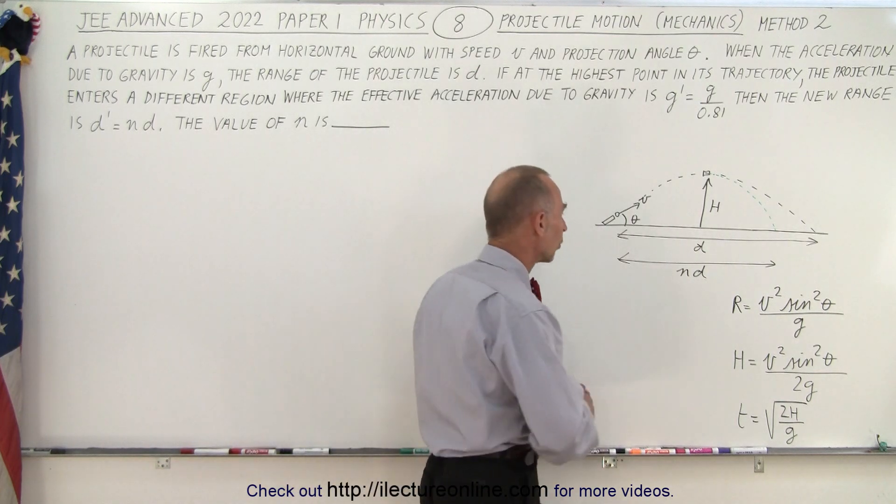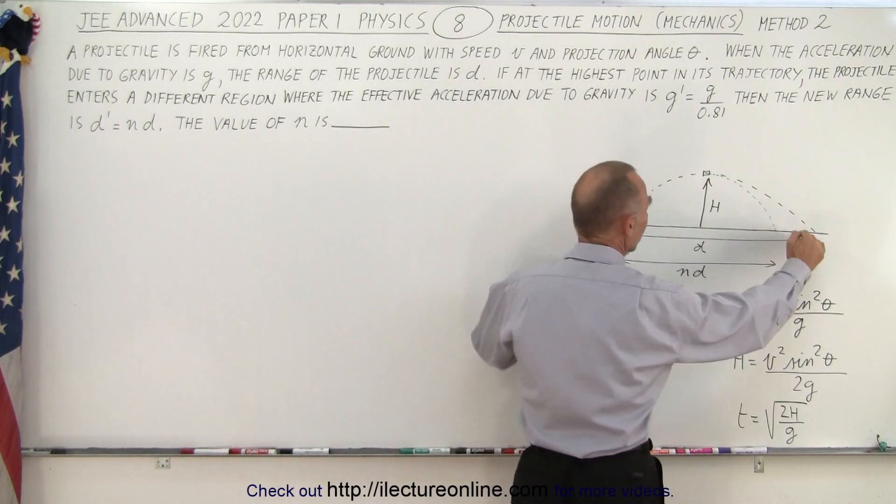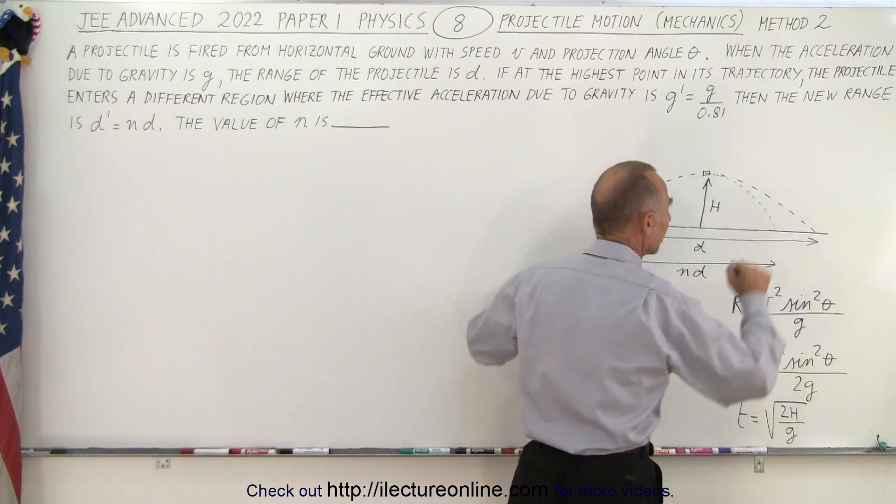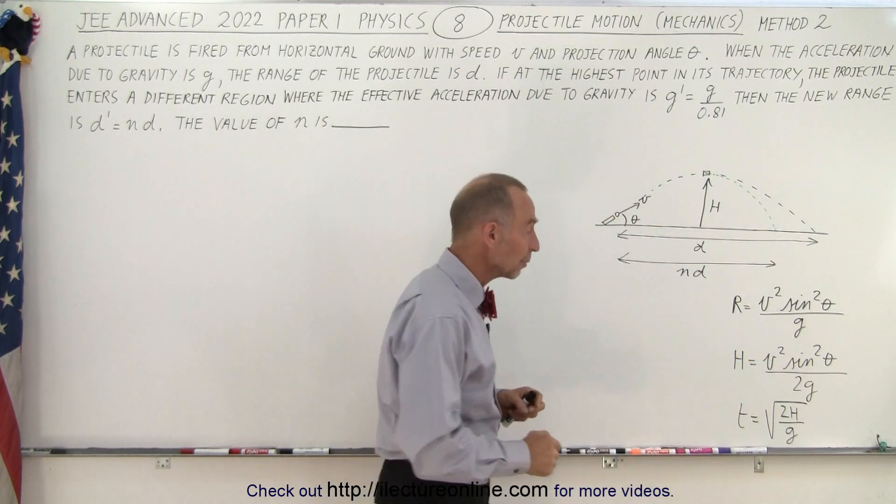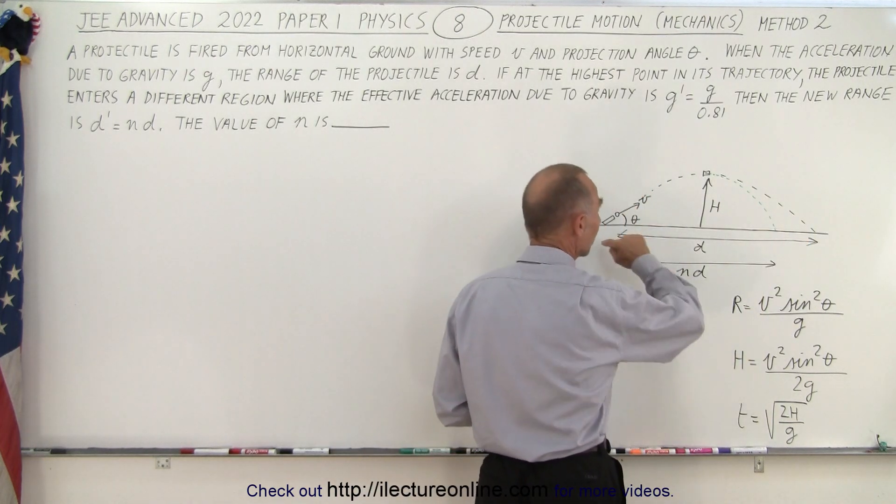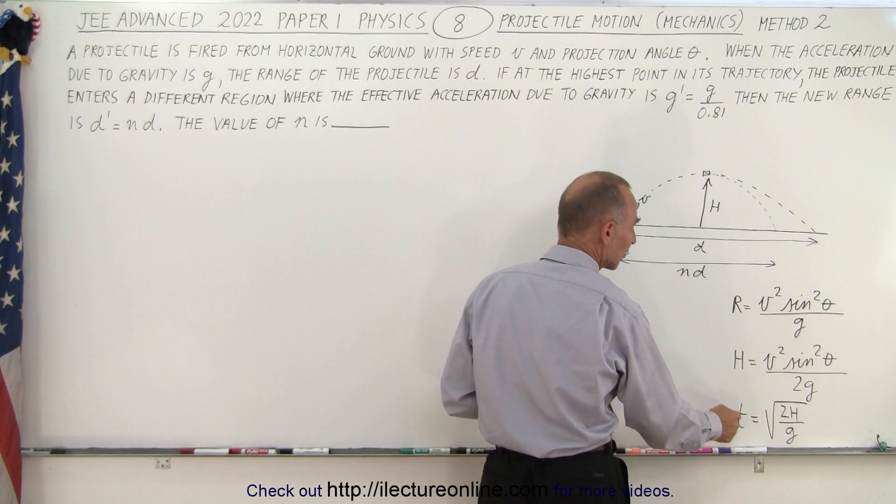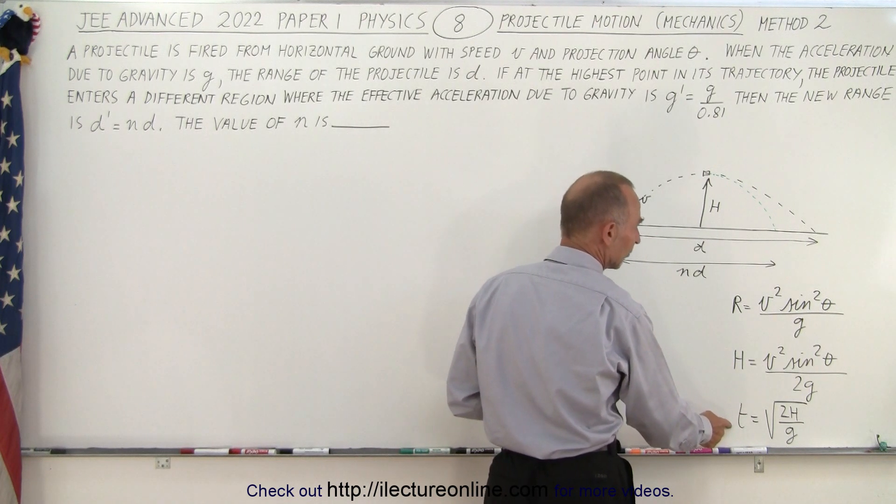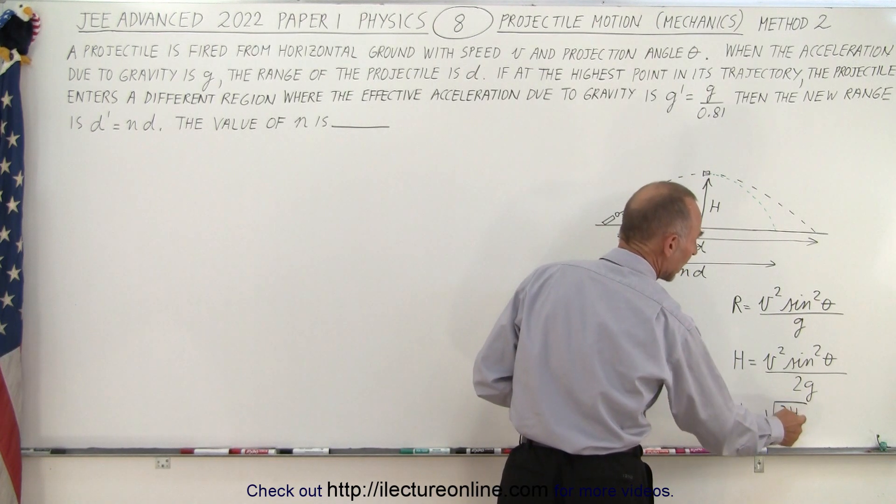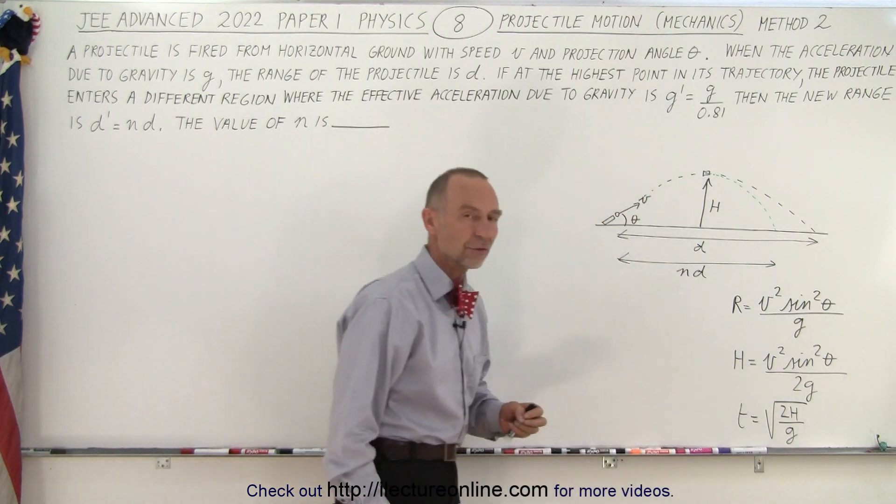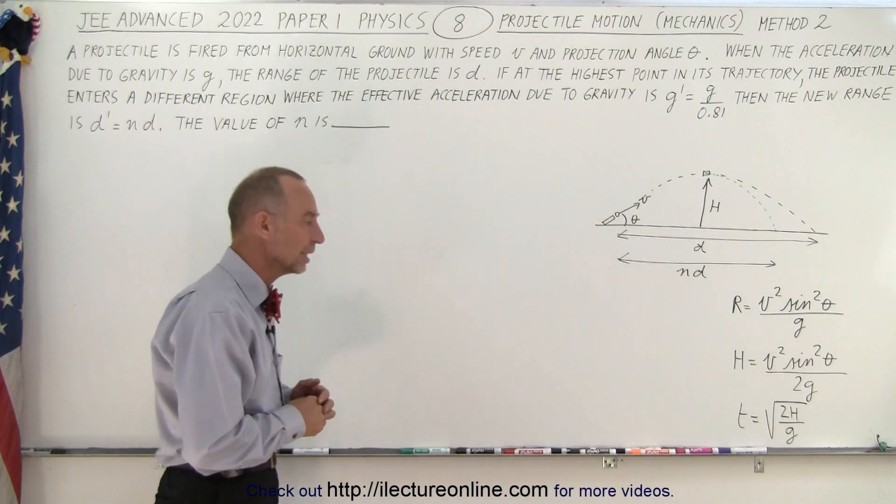So here we have the range going from the starting point to the end point when the starting and the end is at the same elevation. Here we have the height reached of a projectile, and there we have the time in the air when a projectile falls from a height equal to h with gravitational acceleration equal to g.